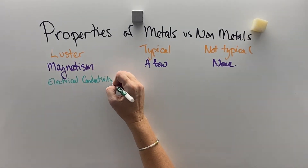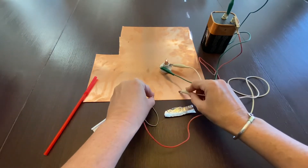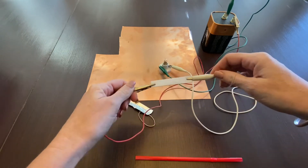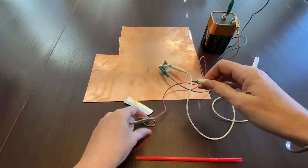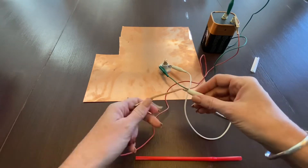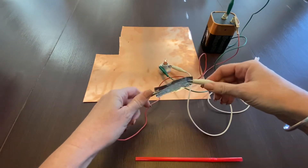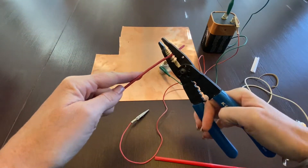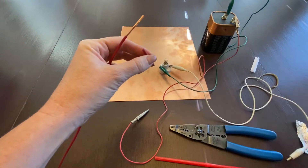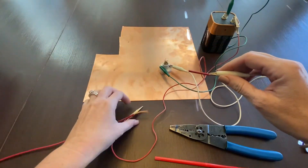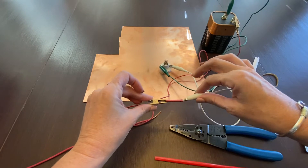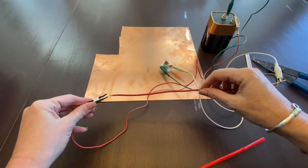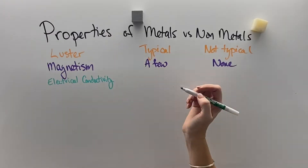Electrical conductivity is another very useful property — it's a stream of electrons that runs through something. Non-metals do not conduct electricity. Metals, on the other hand, do allow electrons to pass through them. So when we're making wires, we want the wires to be metal, like this copper. But the outside of the wire needs to be non-metal so that it insulates and does not let the electricity pass through to the people or substances on the other side — metal on the inside, non-metal insulator on the outside.